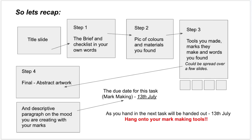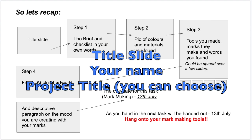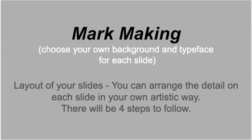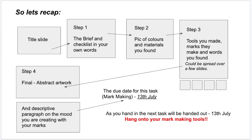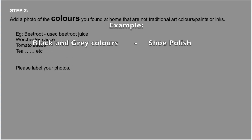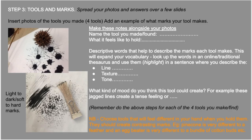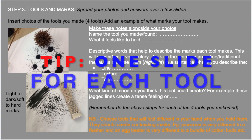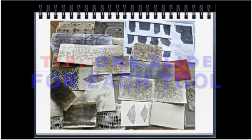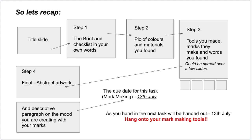Let's recap. Your first slide will be your title slide, and then the work is spread across four steps. Step one is the brief and checklist in your own words. Step two is photos of the colours you found — Worcestershire sauce, tomato sauce, and things like that. Step three is the tools you made or found, all the marks they make, and the words you found, which can be spread over a couple of slides.